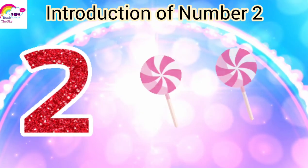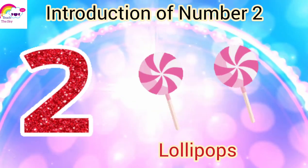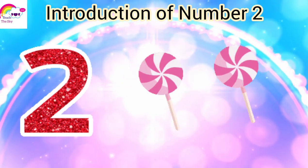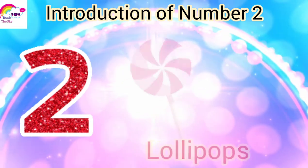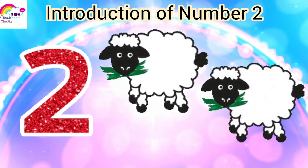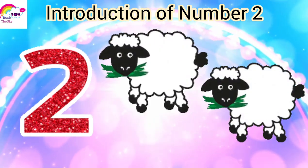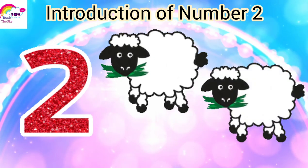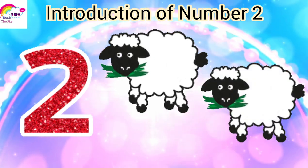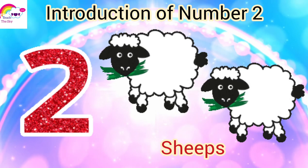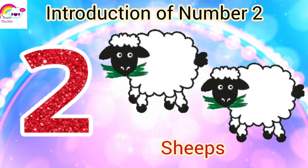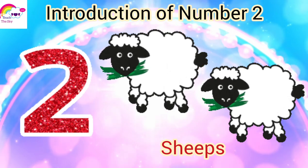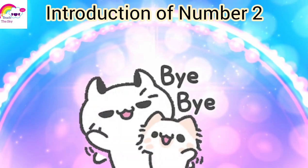Now let us count these lollipops: one lollipop, two lollipops. Now let's count these sheep — how many sheep are here? One, two. There are two sheep. Similarly, count the things that are two around you and do practice of writing number two. Take care, bye bye.